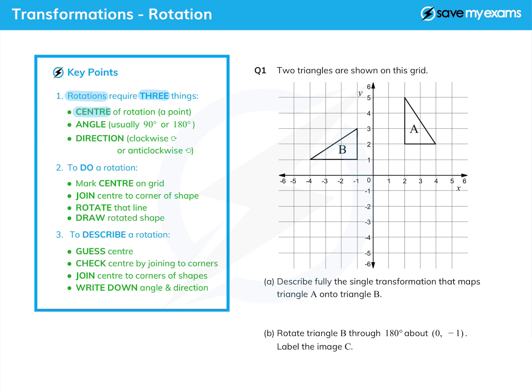They need a center of rotation, that's the point everything swivels around. They need an angle through which things turn, and in this context it's usually 90 degrees or 180 degrees to make life reasonably simple. And you need a direction, unless it's 180 degrees in which case it doesn't matter which way it turns.